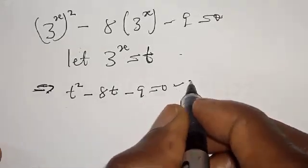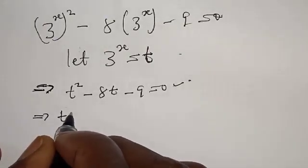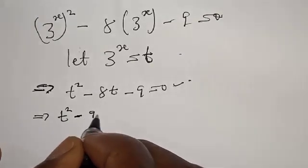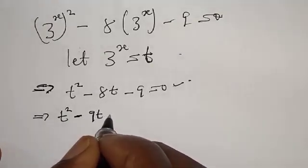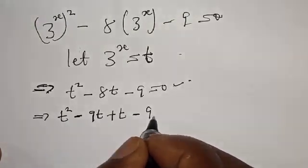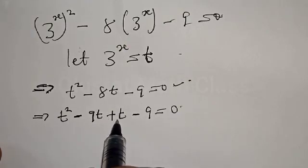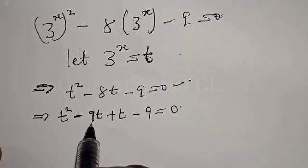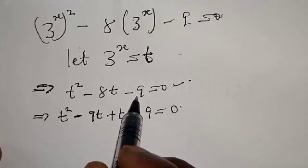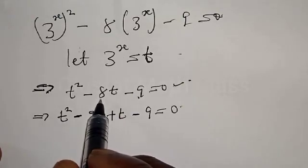This implies that we have T squared minus 8T minus 9 equal to zero. This is a quadratic equation. Let's factorize. We need two numbers that multiply to give minus 9 and add to give minus 8: that is minus 9 and plus 1. So we rewrite as T squared minus 9T plus T minus 9 equals zero.